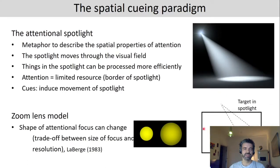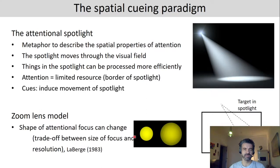There is also a revised model called the zoom lens model. Similar to the spotlight, attention is spatially moved around, but the important part is that the shape of the attentional focus can change. This is a trade-off between size and resolution: a small zoom lens setting allows higher resolution, whereas widening the zoom lens gives less benefit per location but covers a larger area.